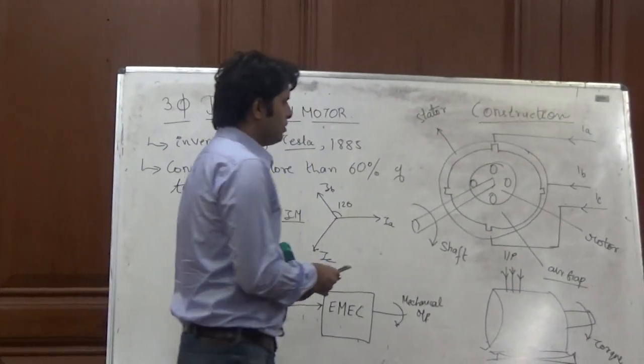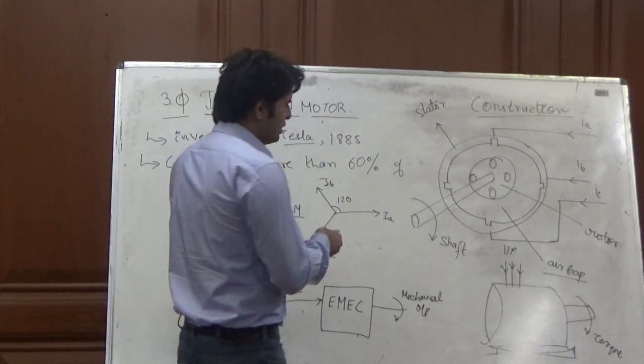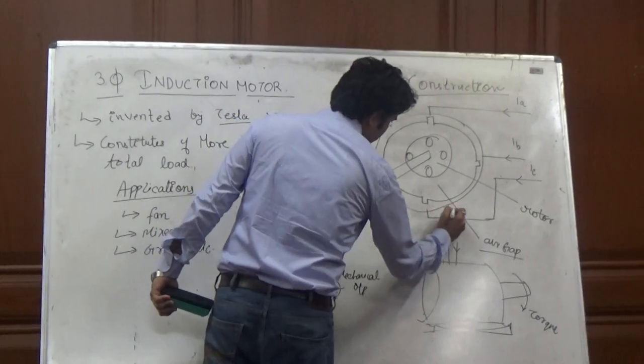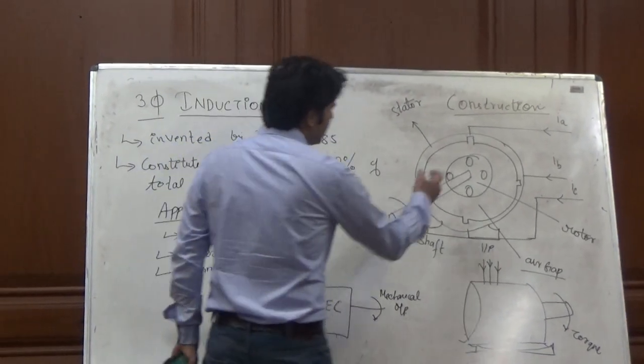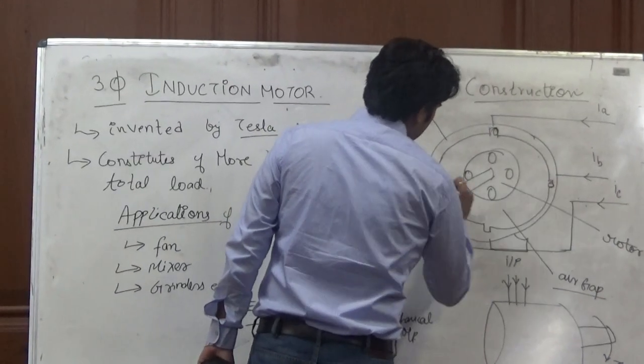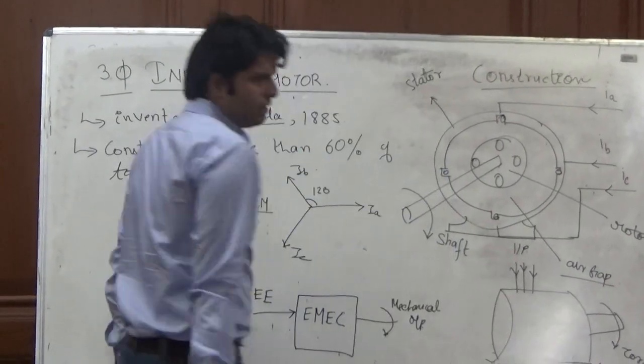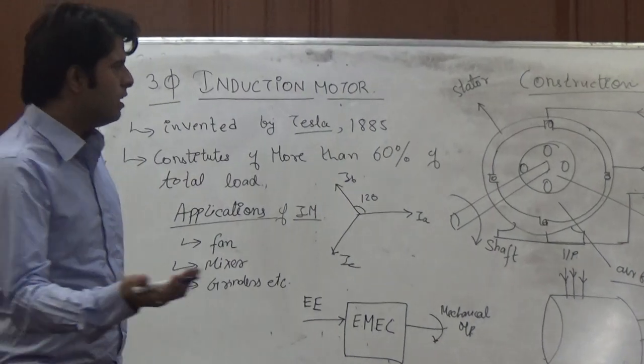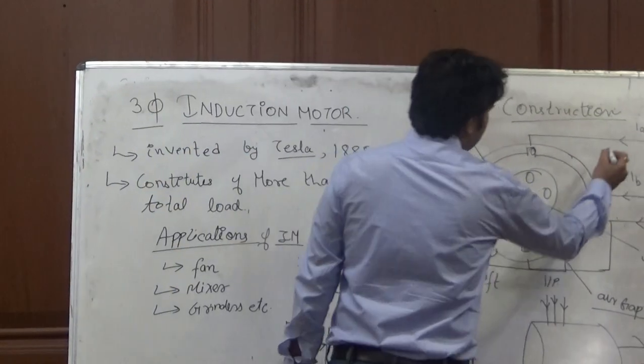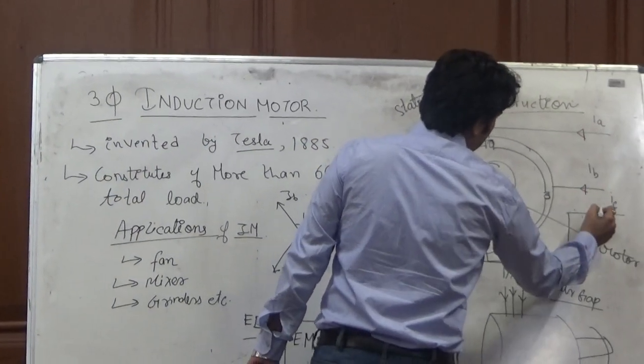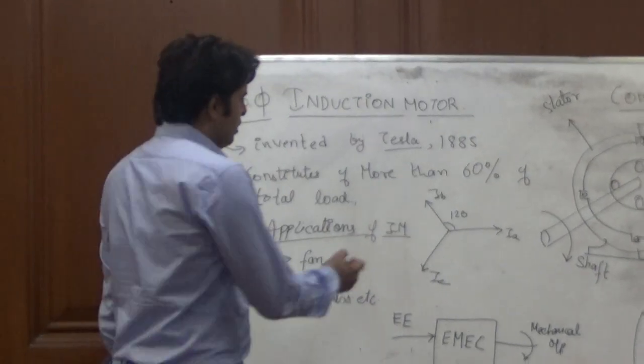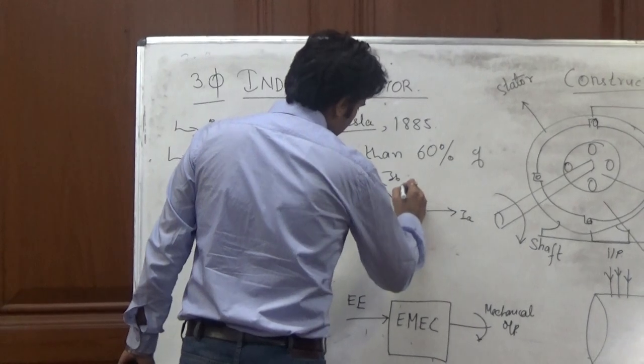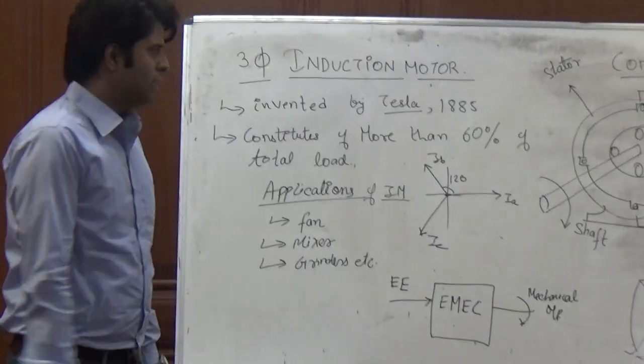3-phase induction motor consists of a stator that is the stationary part. It has some stator slots inside this. The slots have a 3-phase winding through which we are giving the input supplies. IA, IB and IC are the 3-phase current that we are giving. This 3-phase supply is given to the stator winding of the machine.